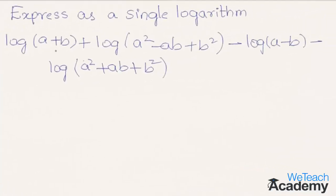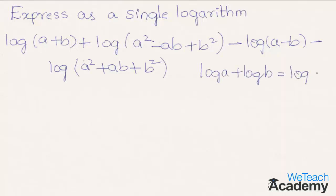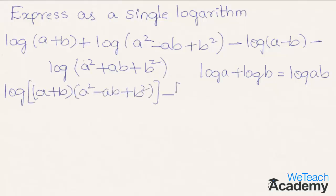Now let us proceed to one more example. The given example is log(a+b) plus log(a²−ab+b²) minus log(a−b) minus log(a²+ab+b²). These terms are in the form of log a plus log b, which equals log(ab). So we can write log[(a+b)(a²−ab+b²)] minus log[(a−b)(a²+ab+b²)].